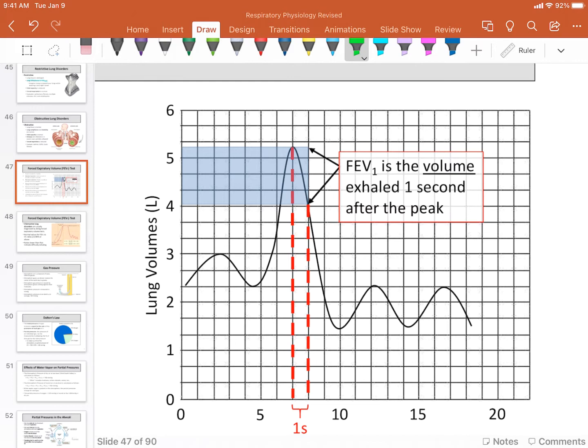You would do a typical normal spirometry, and so you would first begin this test by breathing normally for perhaps a minute or for five complete breaths, just through normal quiet breathing. You would then take a maximal inhalation, breathing in as much as you possibly can, as fast as you possibly can, so this inhalation here.